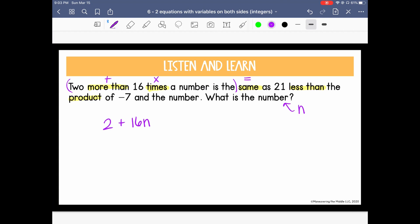Well, it says this is the same as 21 less than, so we're going to be subtracting something by 21, less than the product of negative 7 and the number, and product tells us we have multiplication again. So I have negative 7n, 21 less than that, which means minus 21.